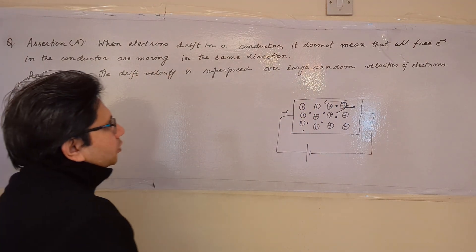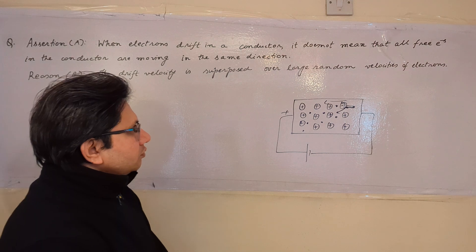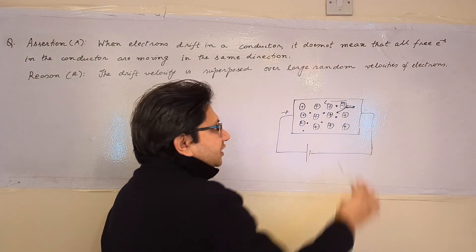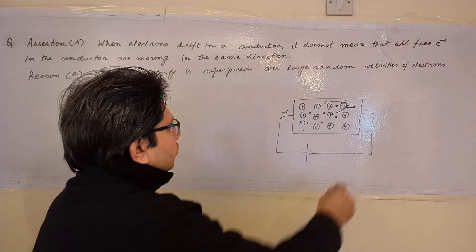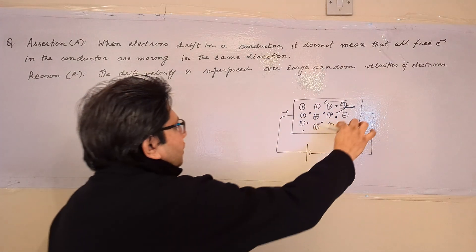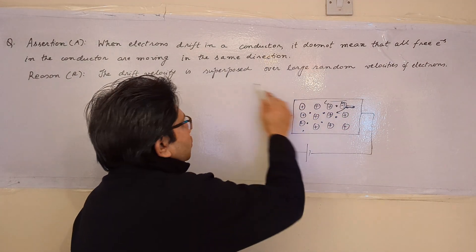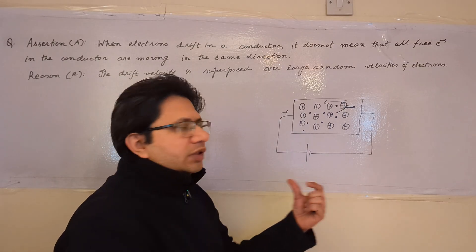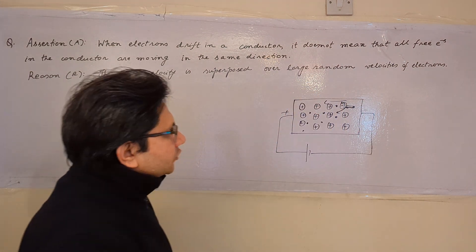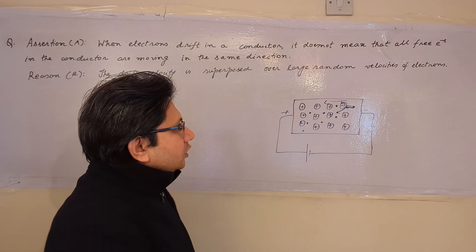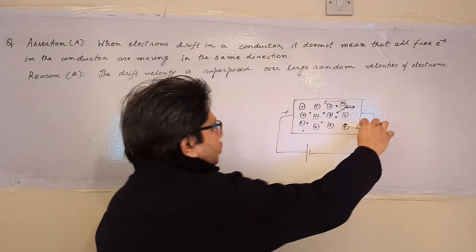The reason states that drift velocity is superposed over the large random velocities of electrons. This reason is also correct, because as explained, electrons change their path — meaning each electron has a random direction. But for the overall picture of the metal or conductor, we take that on average they are moving in a certain direction. We superpose the random velocities, take the average, and assign a net finite direction value.